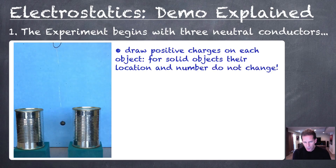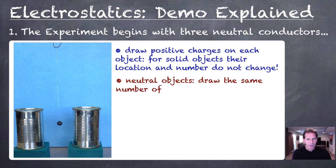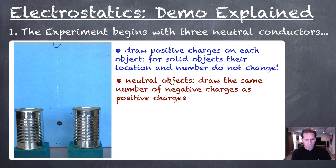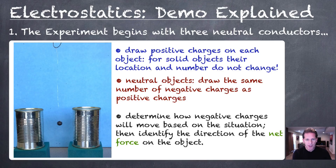To try to understand what's going on here, there are a number of techniques we can use with our diagrams. First, draw the positive charges on each object. Remember, for solid objects, the positive particles will stay in the same place and their numbers do not change. For neutral objects, you have to have the same number of positive charges as negative charges. The number of charges you choose in your diagrams is arbitrary — just make sure the number of negatives and positives are the same in your neutral objects.